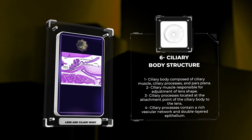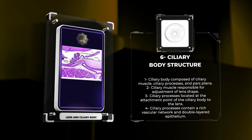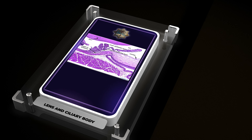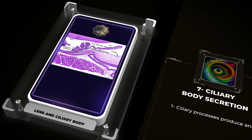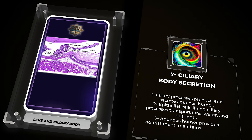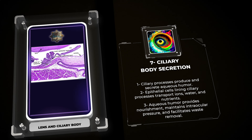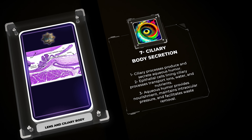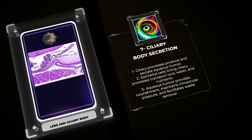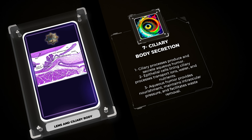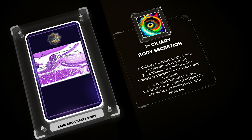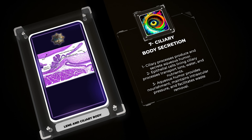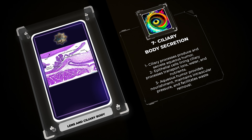Maintaining lens transparency is essential for optimal vision. The transparency of the lens is attributed to the precise arrangement and organization of its cells and fibers. The lens fibers possess a high protein content, predominantly crystallins, which contribute to the refractive properties of the lens. These crystallins are tightly packed and structurally ordered to minimize light scattering. Disturbances in protein organization or accumulation of abnormal proteins can lead to lens opacities, known as cataracts.